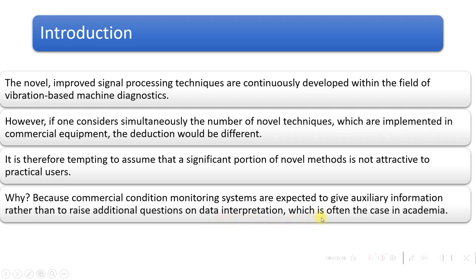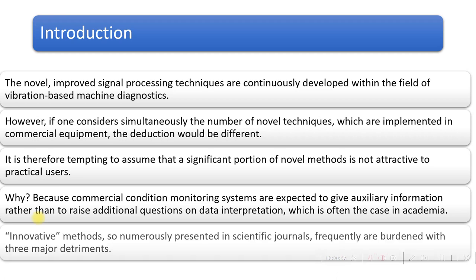Commercial condition monitoring systems are expected to give auxiliary — meaning important and suitable — information, rather than raise additional questions on data interpretation, which is often the case in academia. Academic devices like Arduino-based data systems provide not only required information but also additional unwanted information, requiring extra hardware setup to filter out, which is time-consuming.